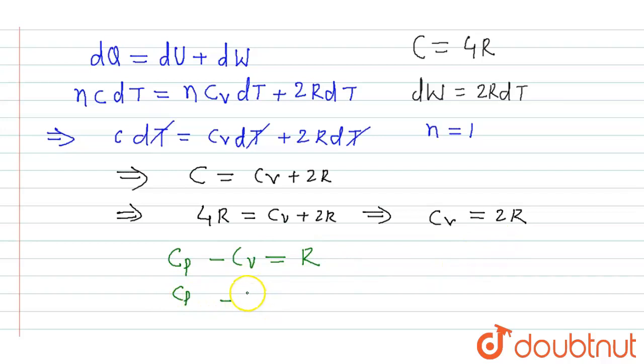Cv is 2R is equal to R. So I can say Cp equal to 3R.